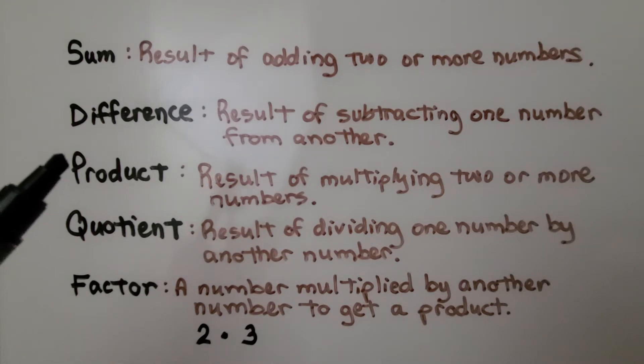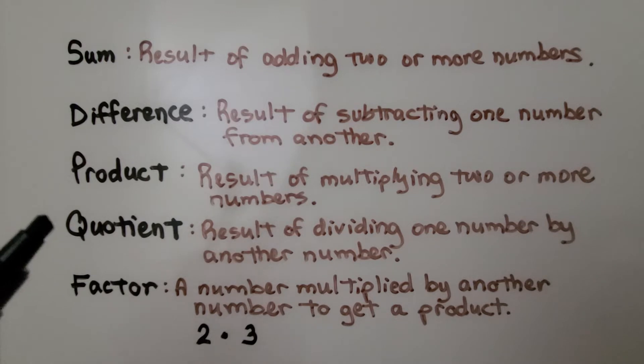A product is the result of multiplying two or more numbers. It's the answer in multiplication. A quotient is the result of dividing one number by another number. It's the answer in division.